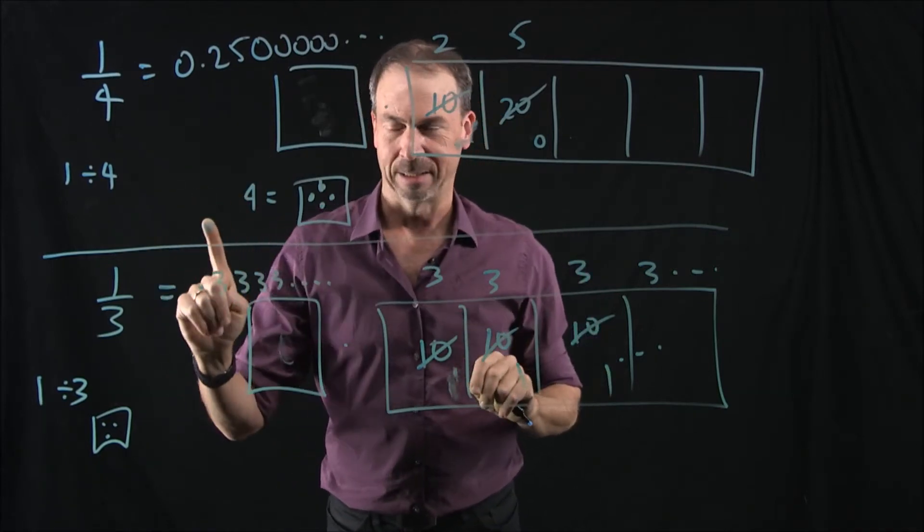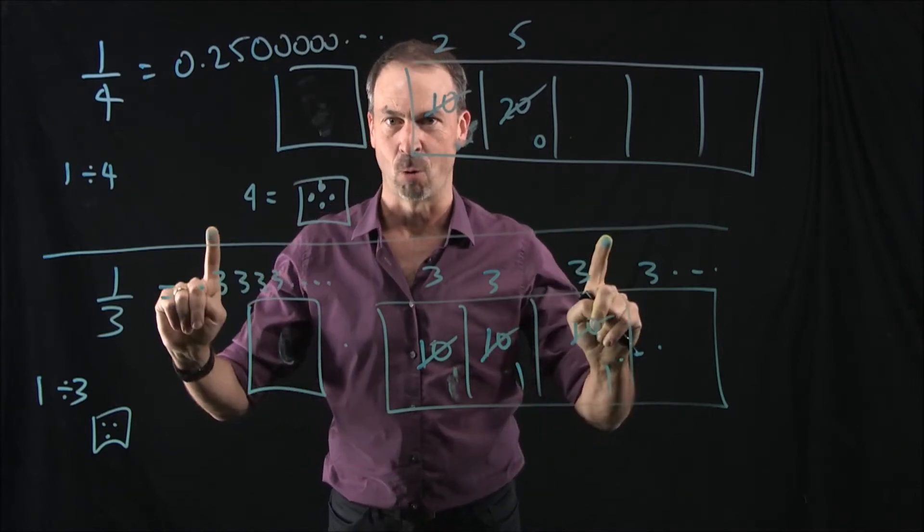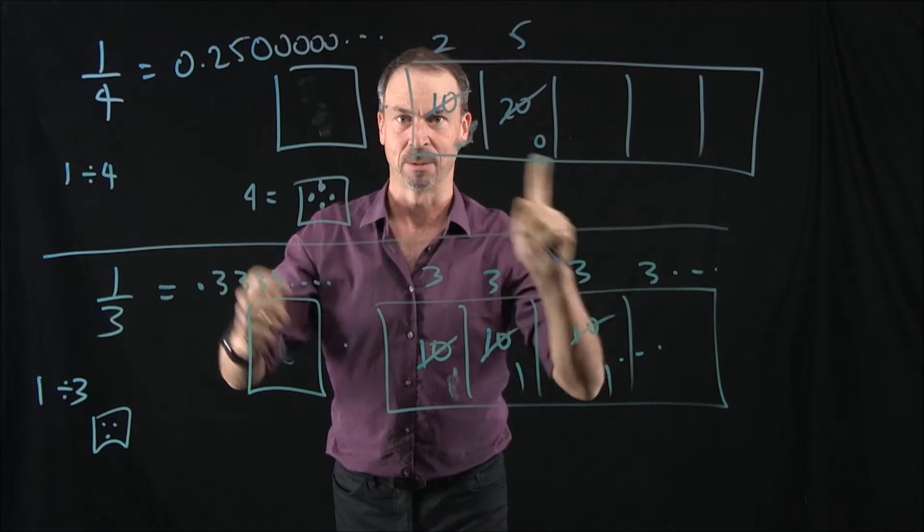Let's do a more awkward fraction next. Let me work out the decimal representation of 6 sevenths. That's a really awkward number. It's going to take a little while. We're going to do it, but I need to clean the boards. I'll be right back.